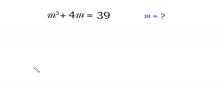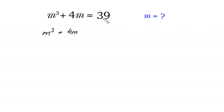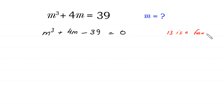Hello, welcome to how to solve this very nice cubic equation: m cubed plus 4m is equal to 39. First of all, we move this 39 to the left side, so m cubed plus 4m minus 39 is equal to 0. Notice that 13 is a factor of 39.